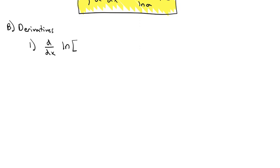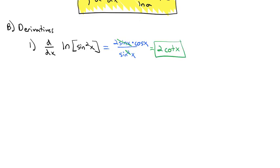Let's take the derivative of the natural log of sine squared x. By the chain rule, the derivative of the outside is 1 over sine squared x, times the derivative of the inside. The inside is an exponent problem: 2 sine x times the derivative of its inside, which is cosine x. This cleans up nicely — the sine cancels one of the sines, and cosine over sine is cotangent x. So the derivative of the natural log of sine squared x is 2 cotangent x.